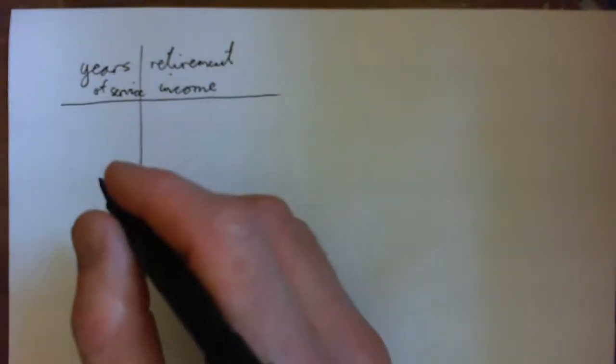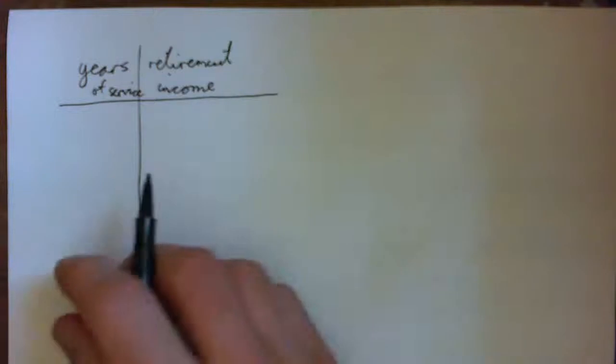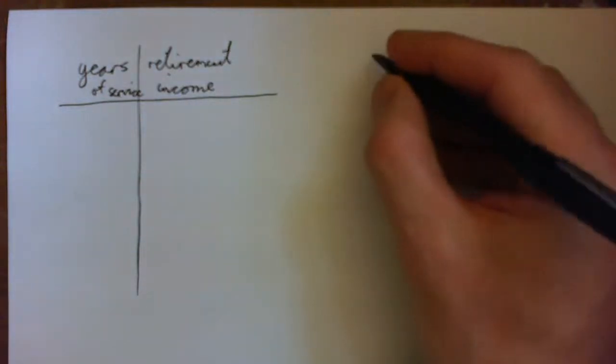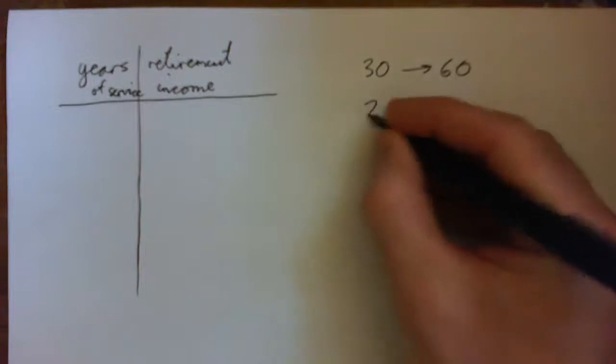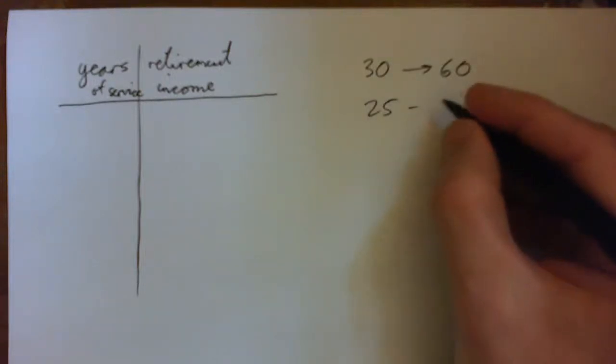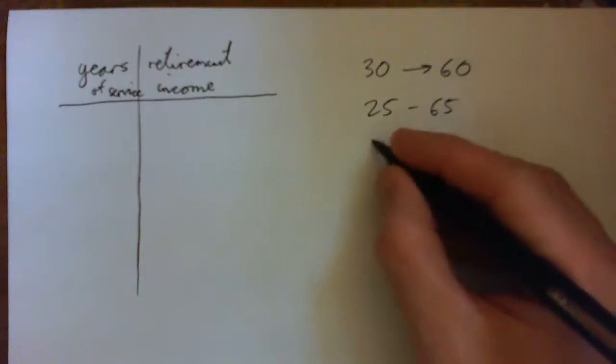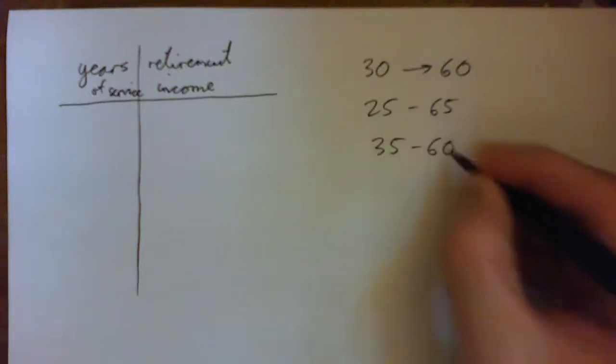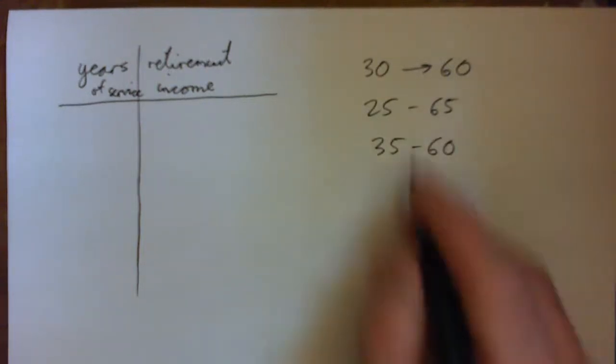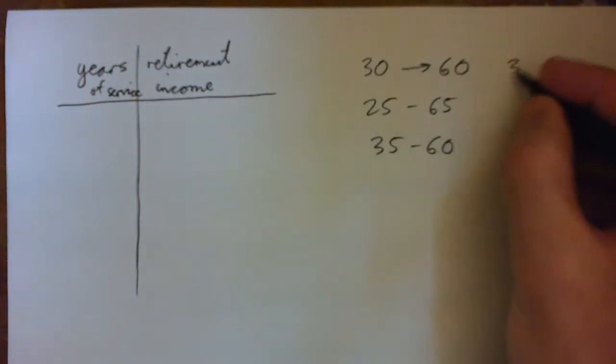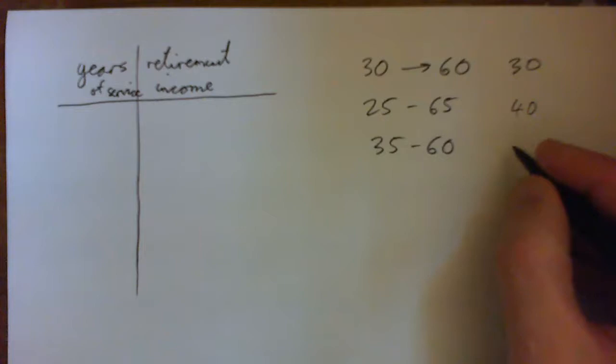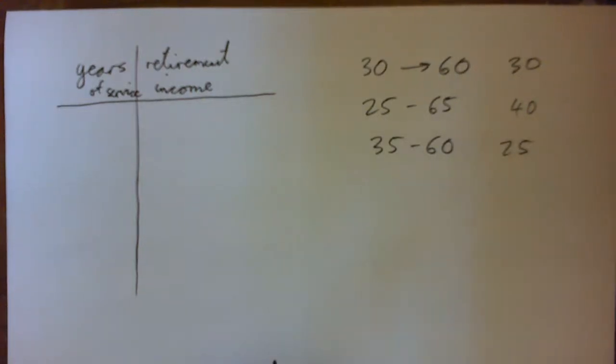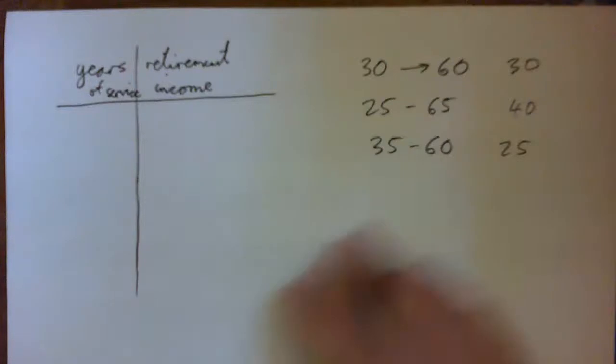I mean they might work from age, let's say they work from age 30 to 60 right, or age 25 to 65, that's a long career, or age 35 to 60 or something like that. So this would be 30 years, this would be something like 40 years, this would be 25 years. Does that make sense? Yeah, so something along those lines just to kind of keep it somewhat realistic.